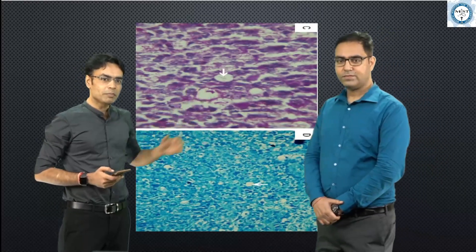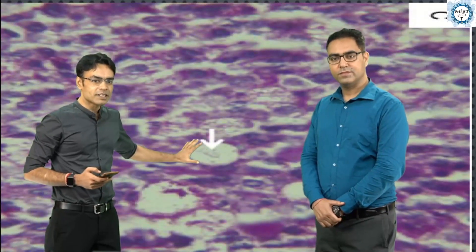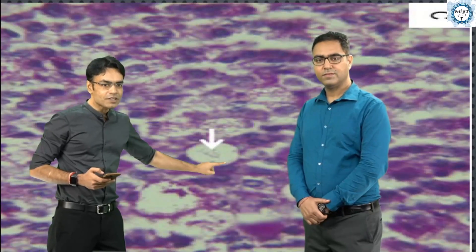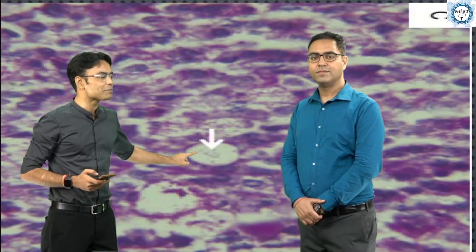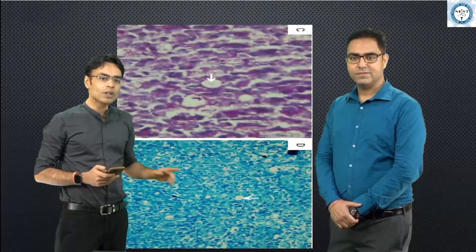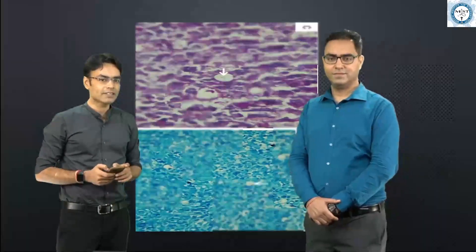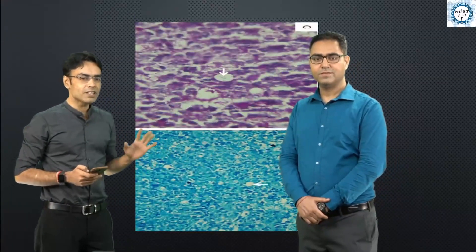When we look at the PAS stain — if I zoom this image — this is again a Mikulicz cell because you are seeing this blank space, and inside this rod-like structure, this is Klebsiella rhinoscleromatis. Likewise in the Giemsa stain, we can have the same finding — this rod-like structure which you are seeing is your Klebsiella rhinoscleromatis. This is what we see histopathologically.